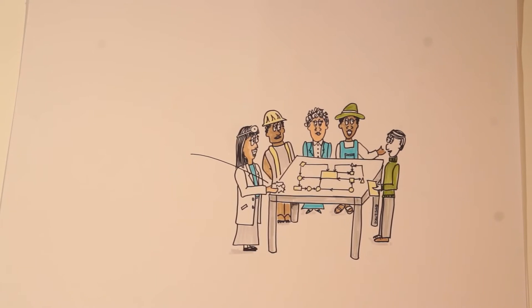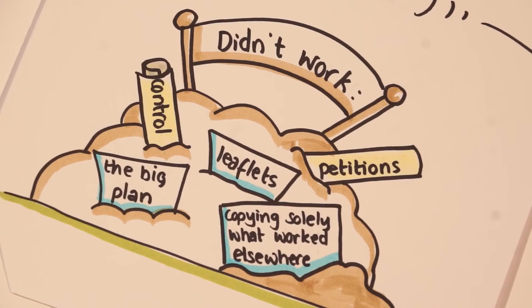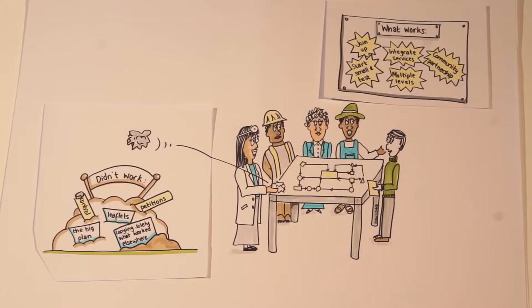Starting small scale is important. Developing a range of interventions that allows us to test theories about what will happen when we intervene helps us deal with uncertainty. Many of our interventions will fail, but that helps us understand how the system works and increases our ability, long term, to have greater impact.